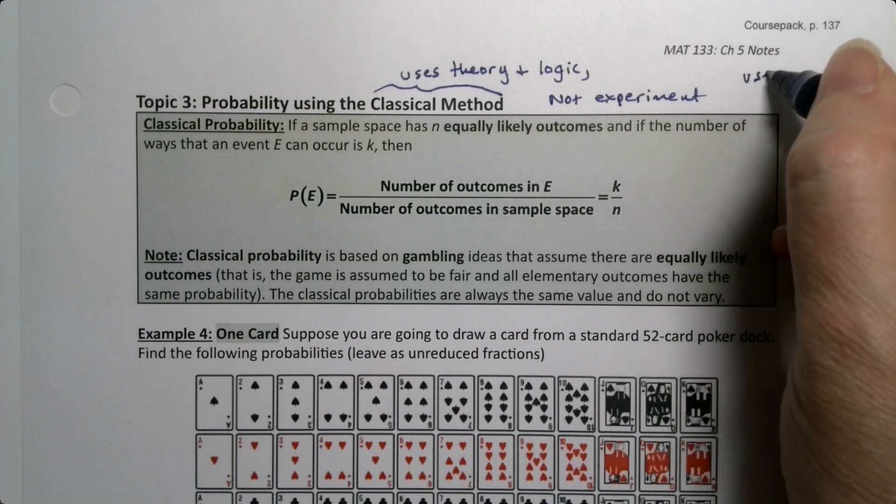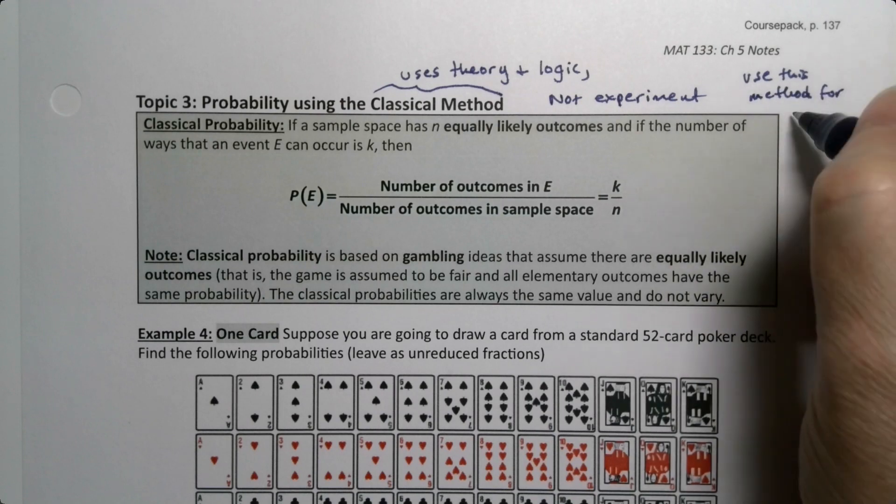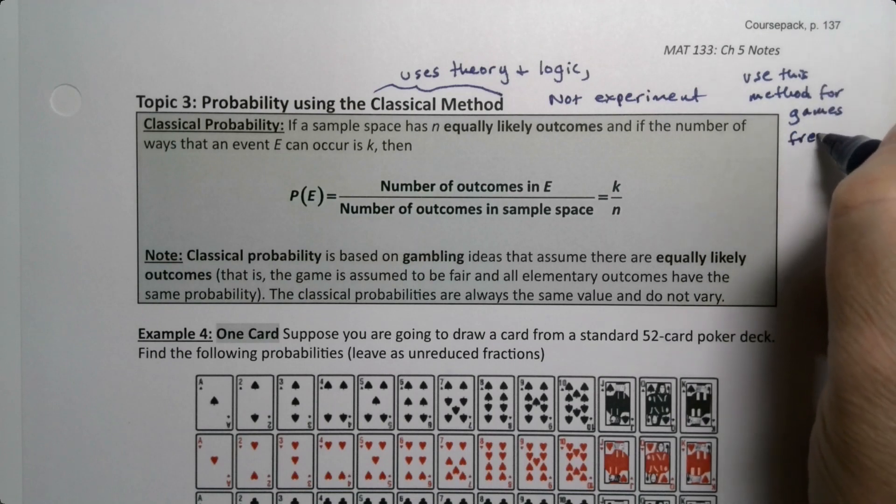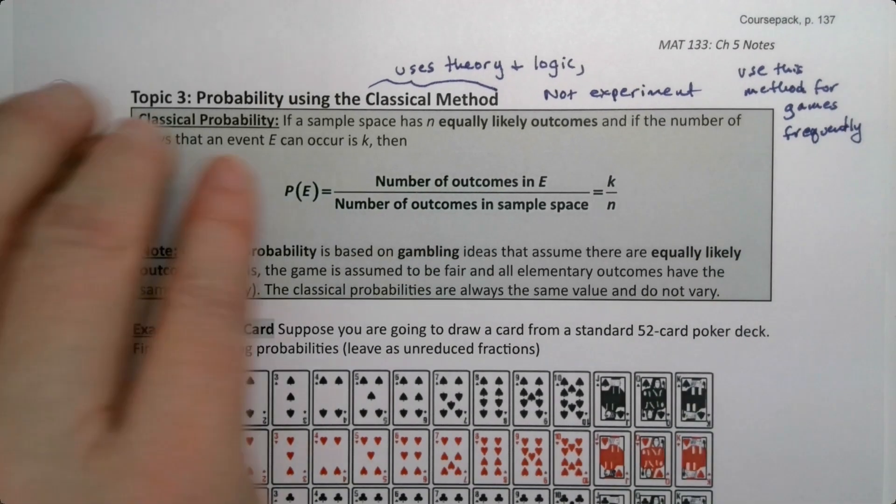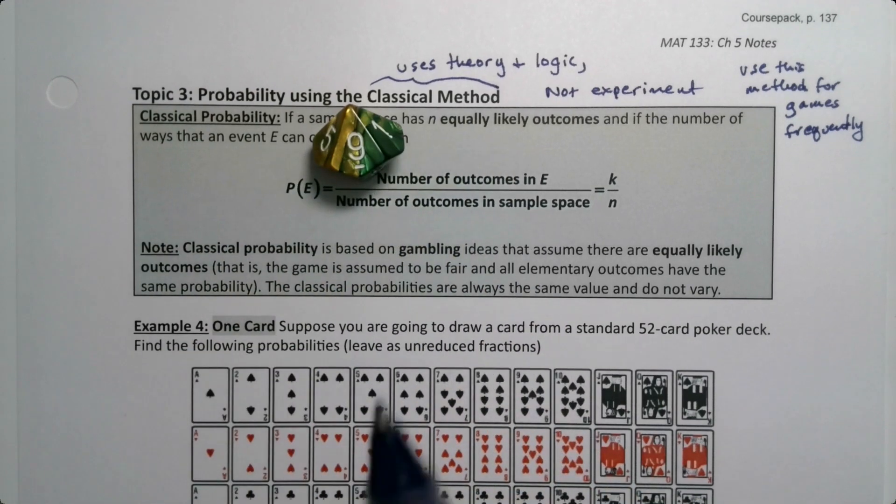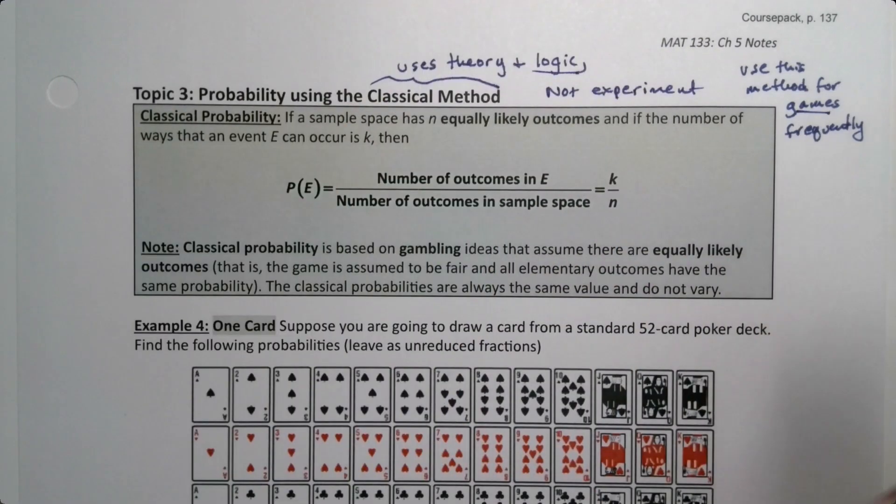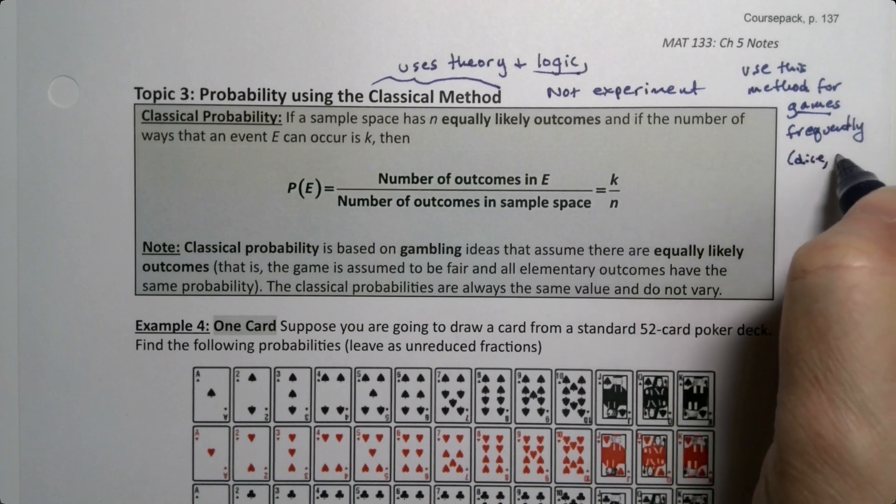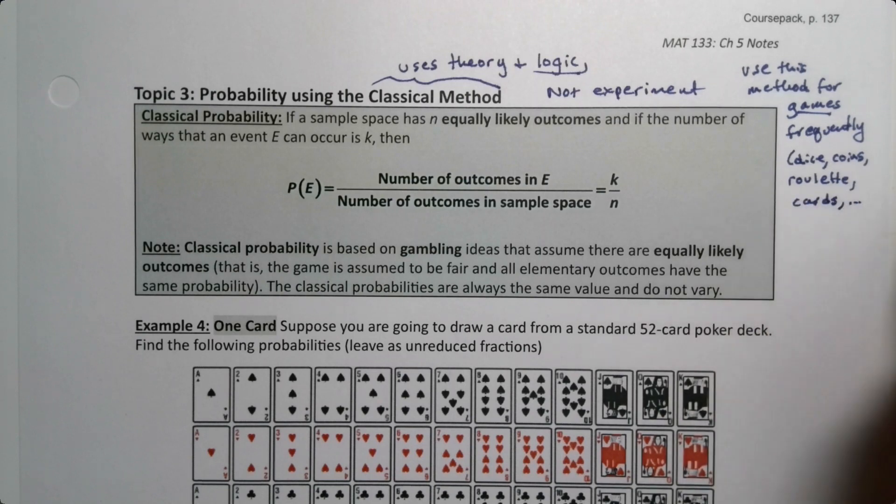So we will use this method for gambling, for games in particular. Sometimes we will talk about somebody actually rolling a die and seeing how many times a nine came up, but if you just look at the die and contemplate the die, then you're using logic. You're not actually experimenting. So we will frequently use this for games.